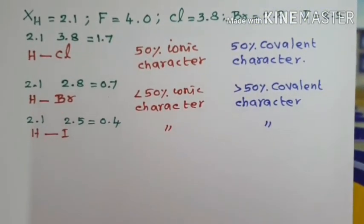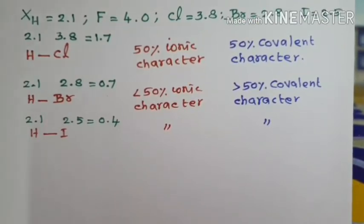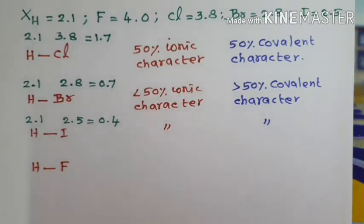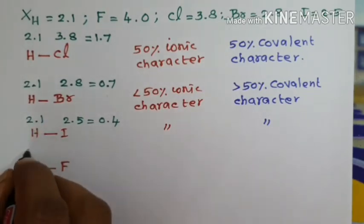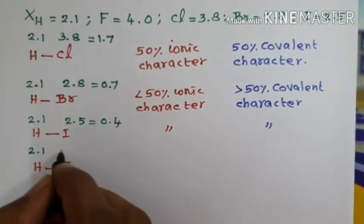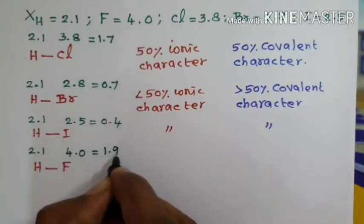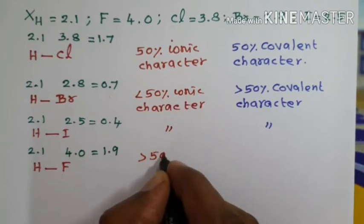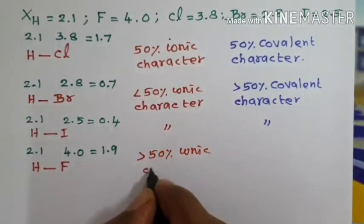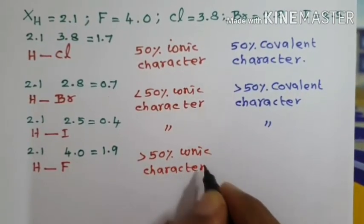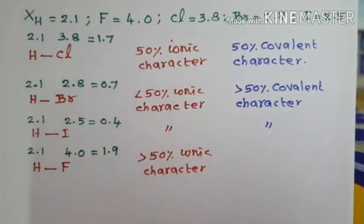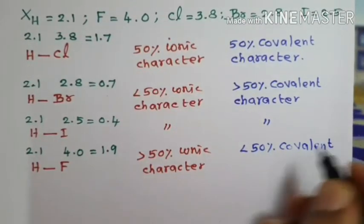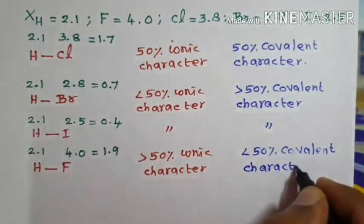The main example of a molecule with more than 50% ionic character is hydrogen fluoride. The electronegativity of hydrogen is 2.1 and fluorine is 4.0; their difference is 1.9, which is greater than 1.7. Therefore, HF has greater than 50% ionic character and is considered an ionic molecule, with less than 50% covalent character.